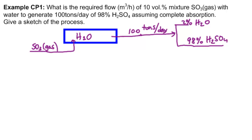So the first thing we can conclude is that if we have 100 tons per day and 98% of it is H2SO4, we have 98 tons per day of H2SO4. So now let's find the molar flow of SO3.